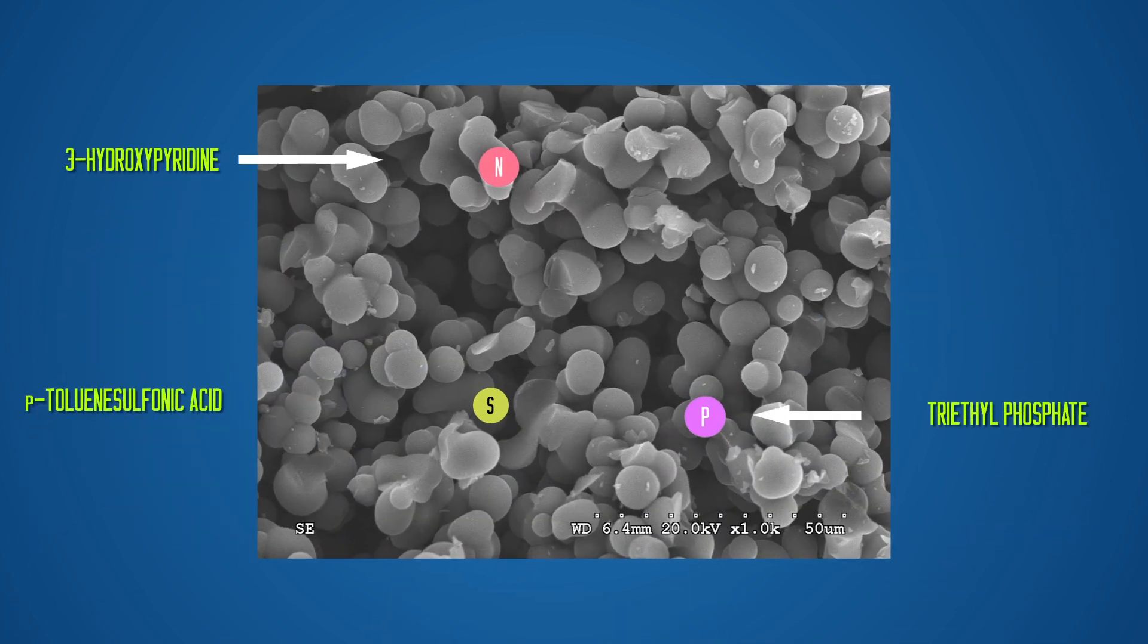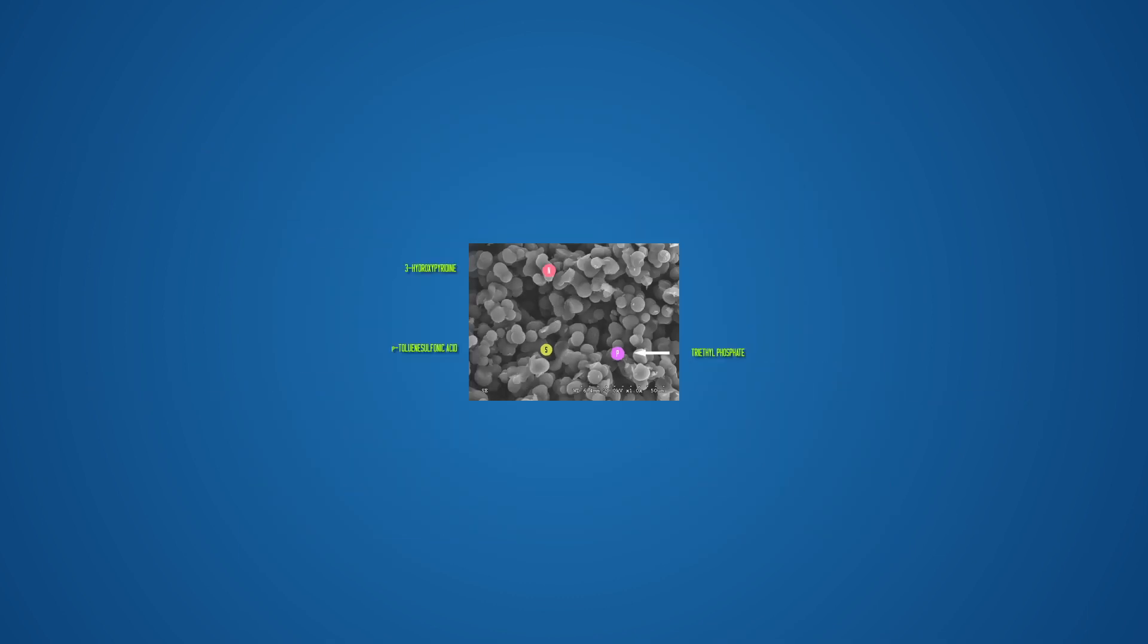Another interesting approach is to choose different carbon precursors in the initial DES to dope the carbons with different heteroatoms. By doing so, you can use these materials as fuel cell electrodes.